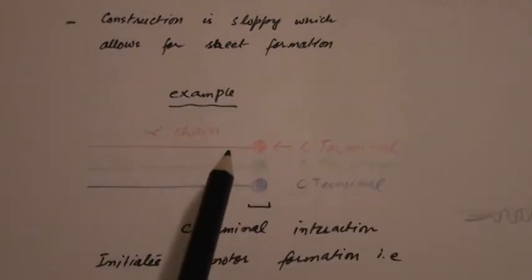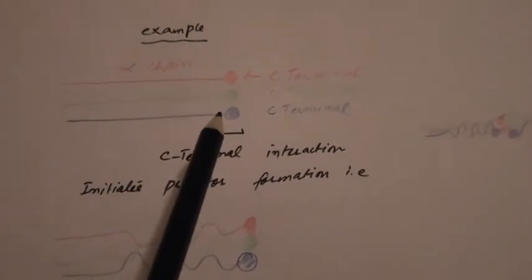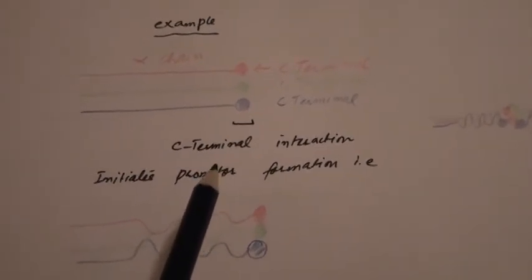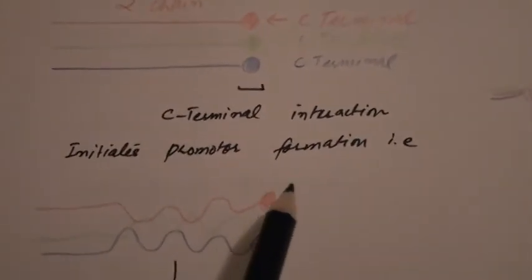Let's quickly look at collagen 4 formation. This is an alpha chain with a C-terminal here. In normal collagen this C-terminal will be removed, but in collagen 4 it will not be. When these C-terminals come near each other, they trigger each other and initiate promoter formation.